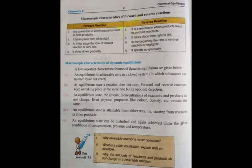In an open system, when you have a gas product, it will escape out of the system. But in a closed system, the gas will remain and can combine again with the other reactants, allowing equilibrium to be established.